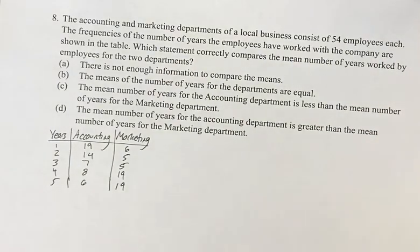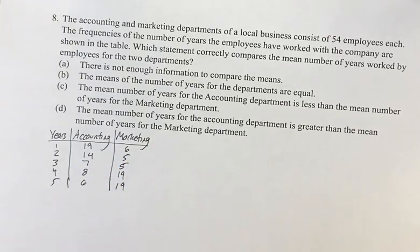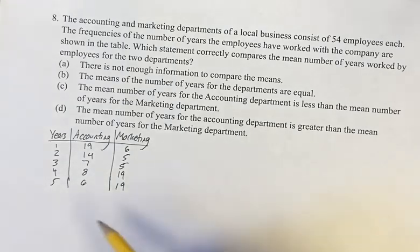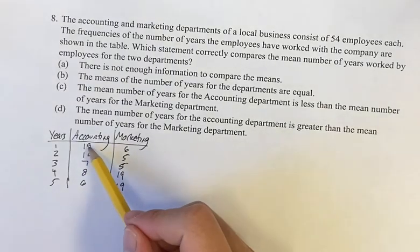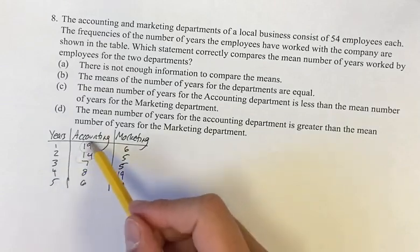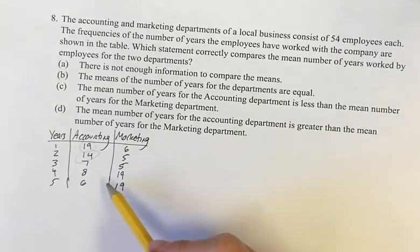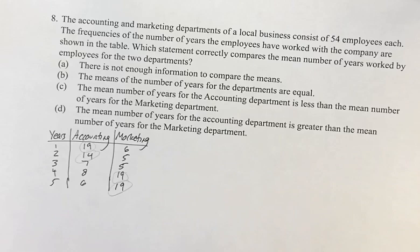Now what we are going to do is calculate this, but just taking a look at this — if you had to guess, what would you say is the larger mean or the smaller mean? Well, if we look at accounting, the highest numbers 19 and 14 are at the lower number of years, whereas for marketing it seems to be the opposite, where more people are in the higher years. So we would expect marketing to have a higher mean.